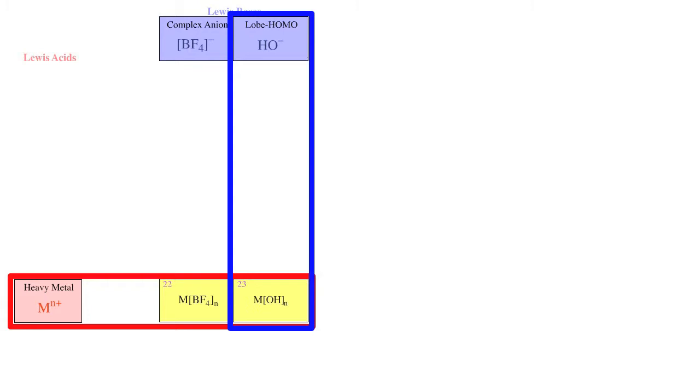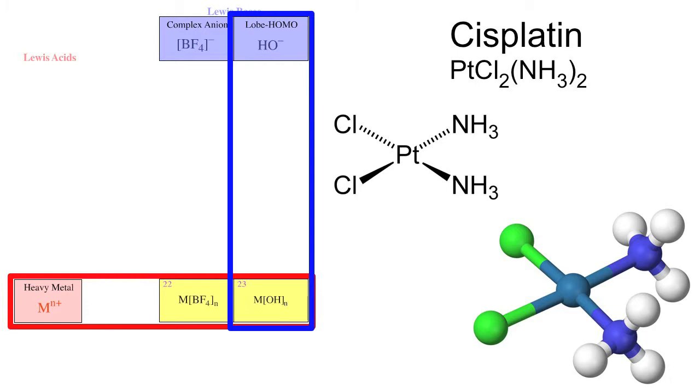Type 23 complexes constitute a huge group of compounds. This is typified by cisplatin, a Pt2+ ion surrounded by four lobe HOMO ligands. Cisplatin is an important anti-cancer agent.